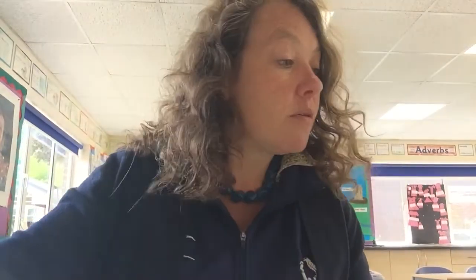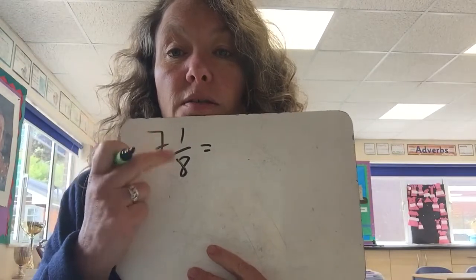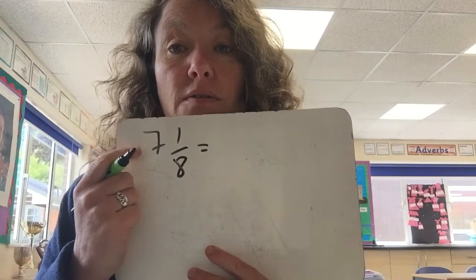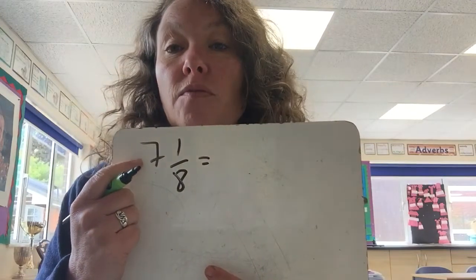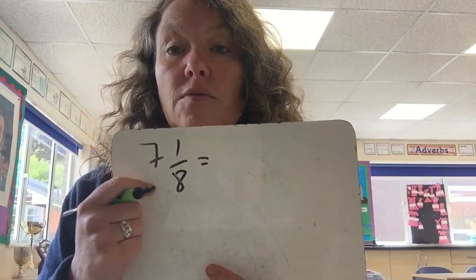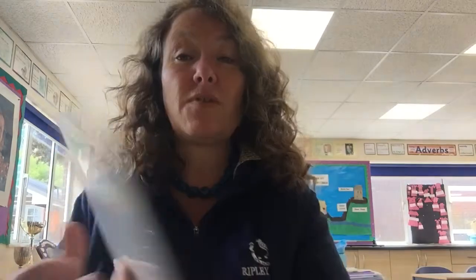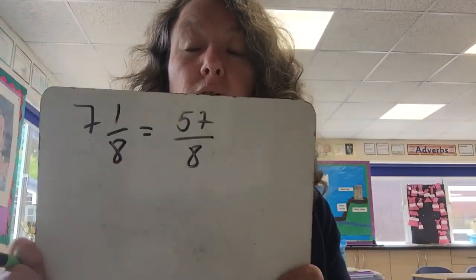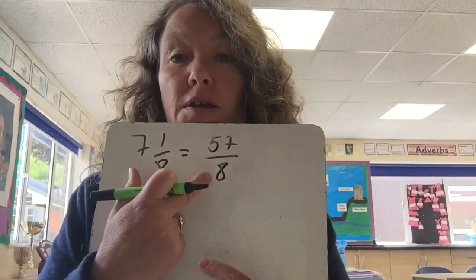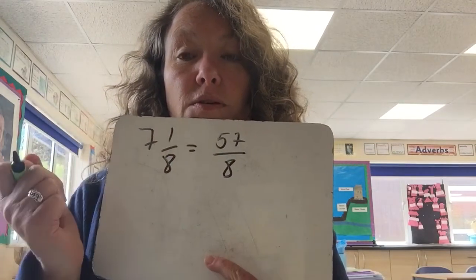Last one: seven and one-eighth. We've got seven whole ones and one-eighth, so we convert our seven whole ones into eighths. We do seven times eight, which is 56. So in seven whole ones we've got 56 eighths, plus that one extra — so it's going to be 57 eighths. Double check: how many eighths in 57? Seven, remainder one.